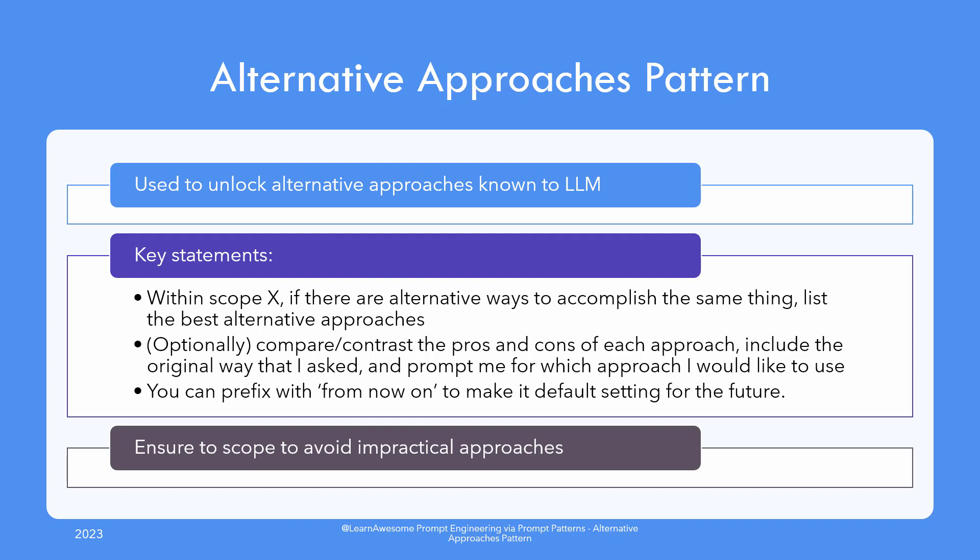The alternative approach must add value to the user's desired outcome. For example, if a software developer is trying to upload an application to the cloud, context such as which cloud provider, whether it's a hobby project or enterprise system, and which programming language the application was built in are important factors to constrain the solution set. Suggesting a tool that costs thousands of dollars to deploy a hobby project would be immediately rejected, and hence scope is important so the large language model can come up with practical alternative solutions.